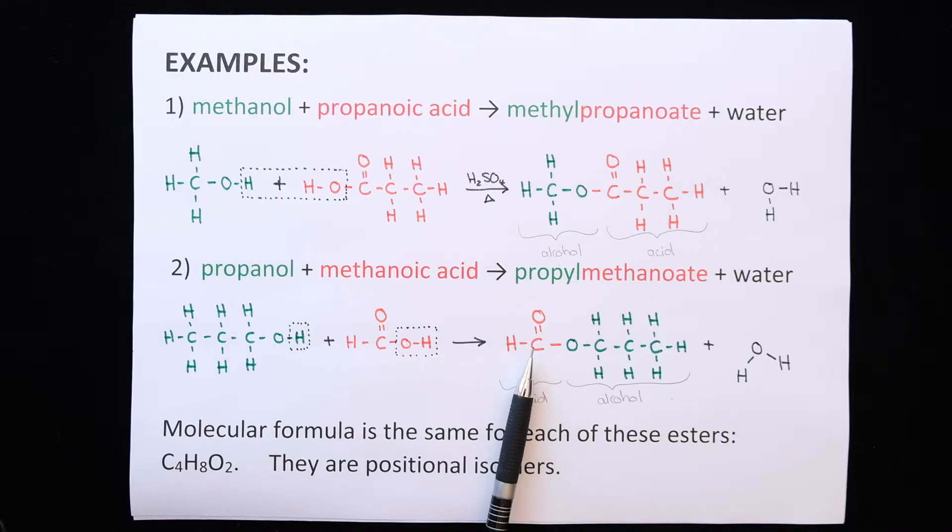So your carboxylic acid was methanoic acid. Your alcohol was propanol. So the name of this ester is propylmethanoate.